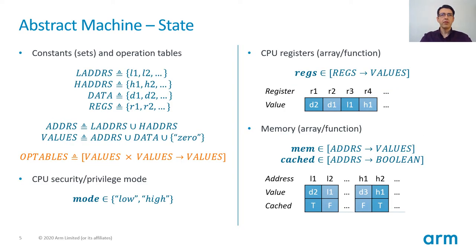Let's now dive into the abstract CPU model and define the system state. Rather than using 64-bit values and arithmetics, for which the model checker won't scale, we go for sets of model values. We define symbols for low and high addresses, data values, and a set of names for the CPU registers. Since we don't have actual numbers and arithmetics, we need to define a set of operations on these values. An operation is a function that takes two values and gives back a new one. Optables here is the set of all such functions over the values we defined.